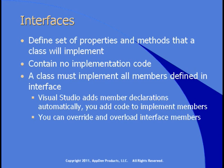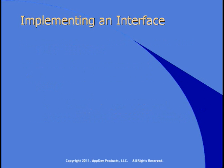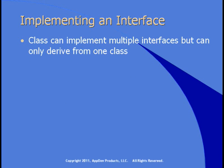Once you've implemented an interface and added members to the class, you can override them or overload them. The big difference between an abstract class and an interface is that a class can implement multiple interfaces, but it can only derive from one class.